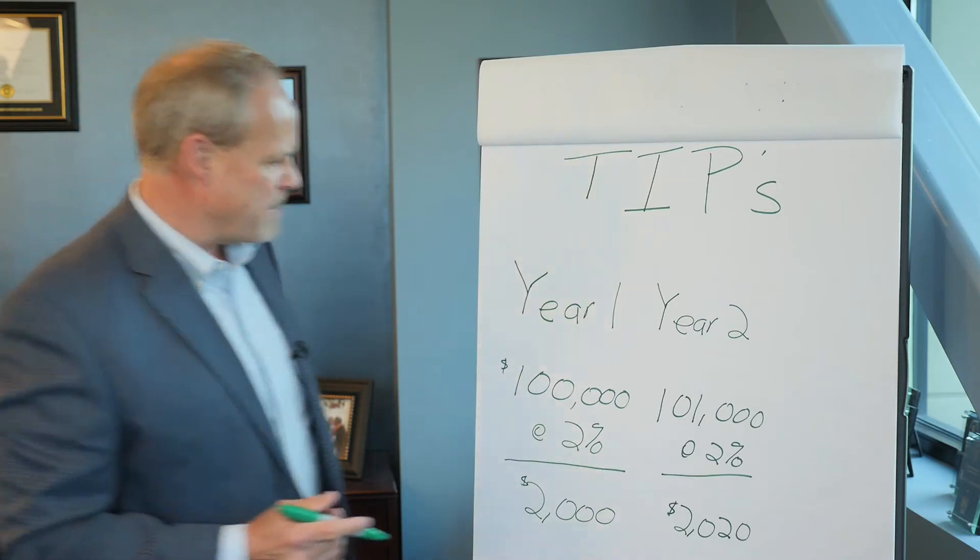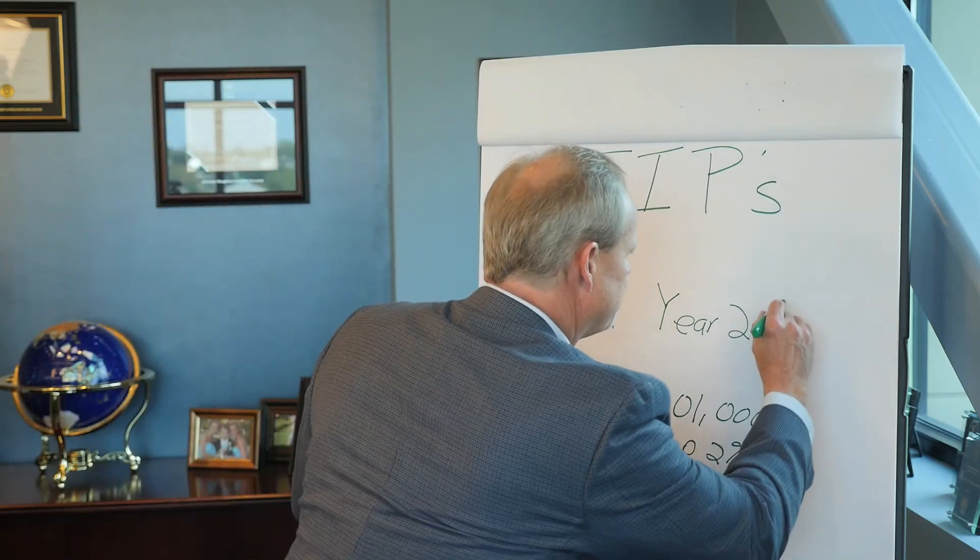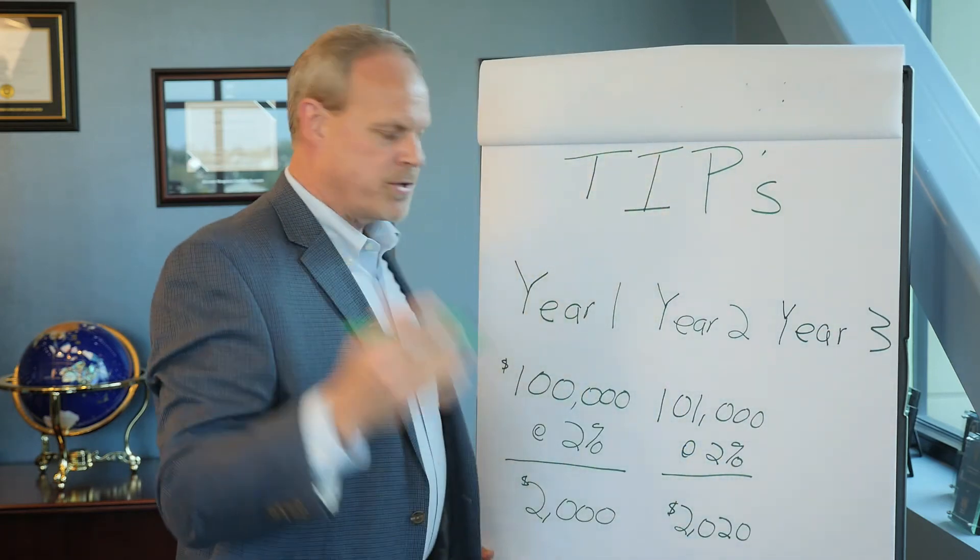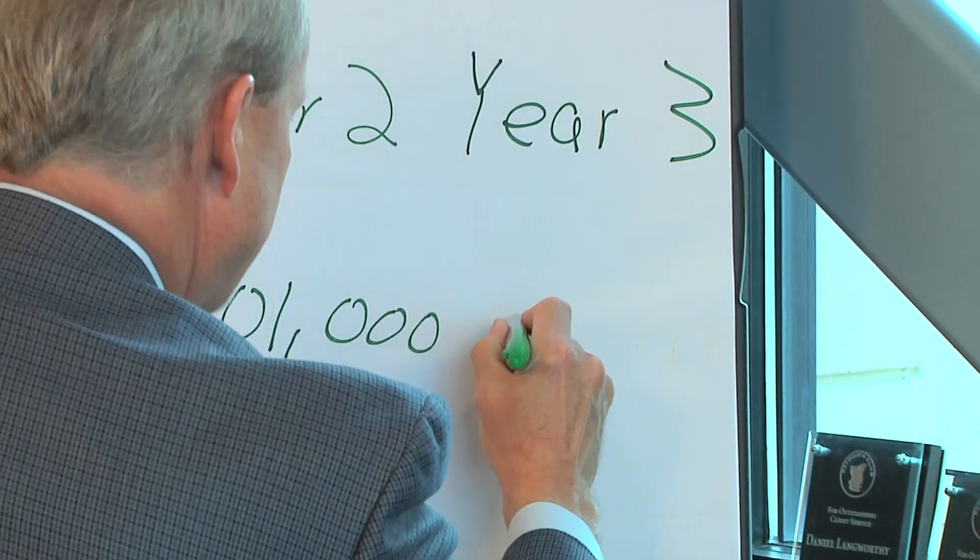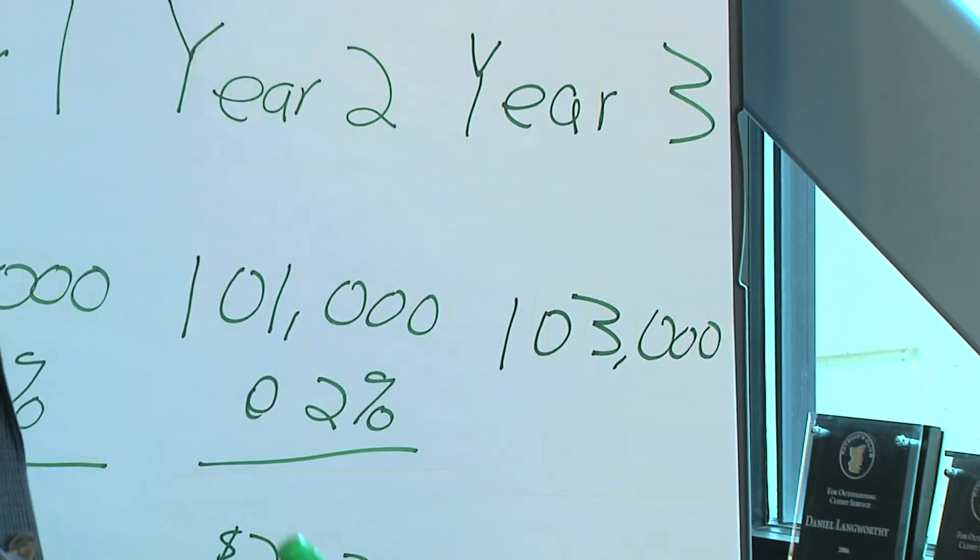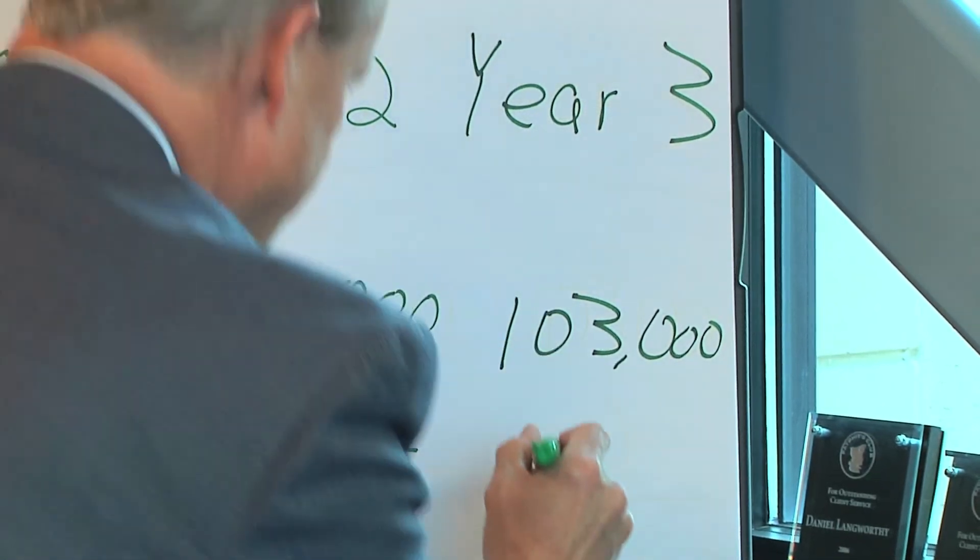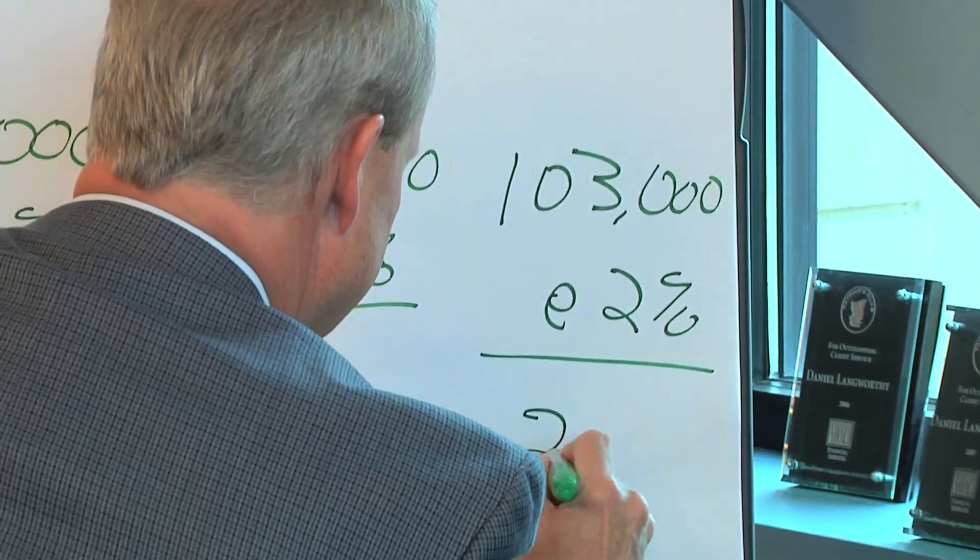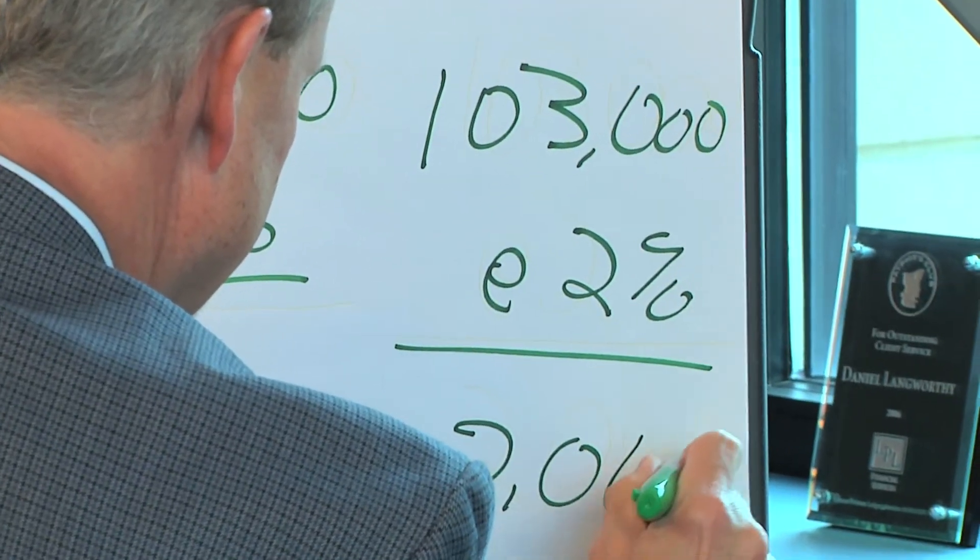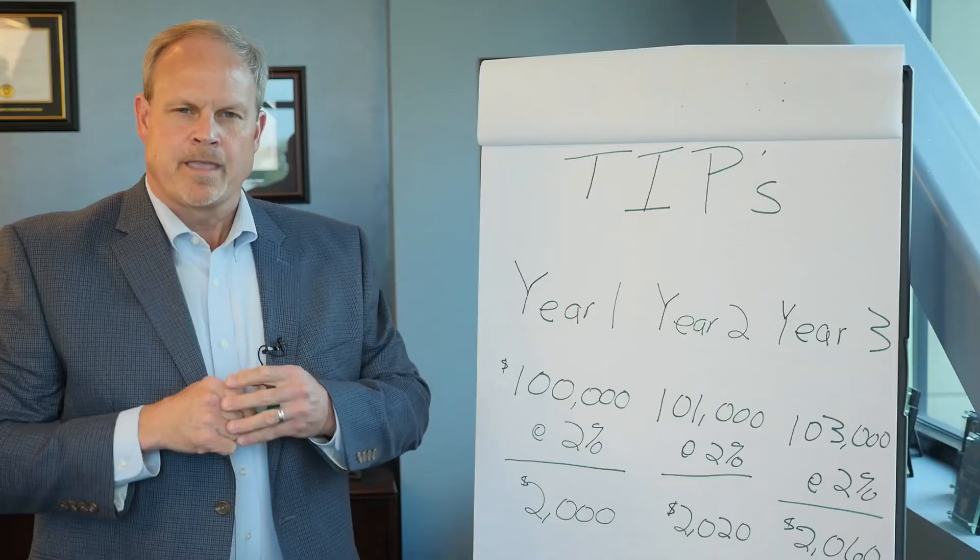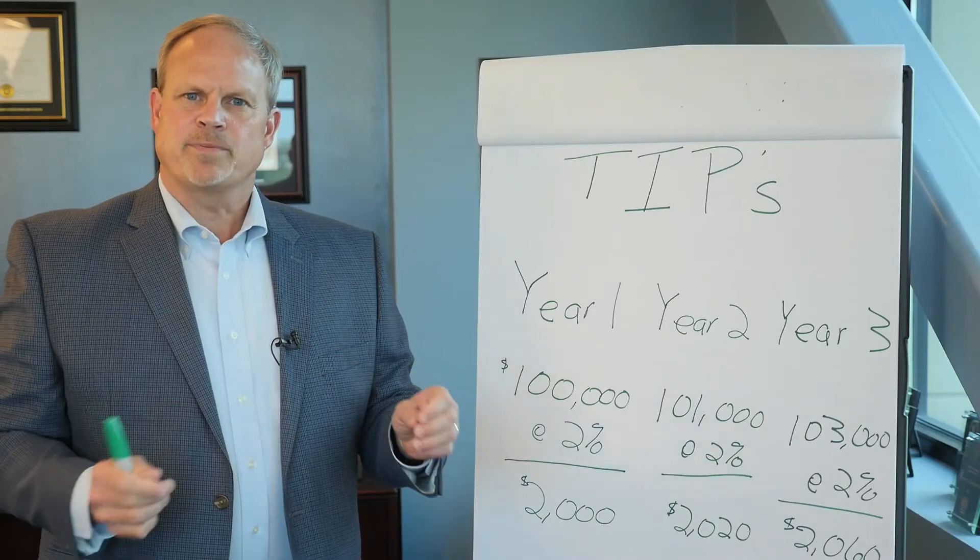Again, in this hypothetical example, let's say the Consumer Price Index went up to three percent in year three, so our face value now is one hundred and three thousand, and again with a two percent coupon, the income annually would be two thousand sixty dollars.